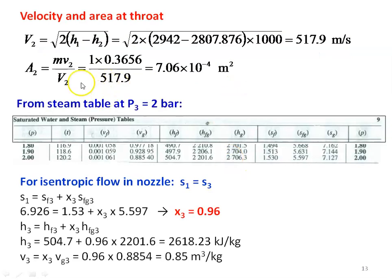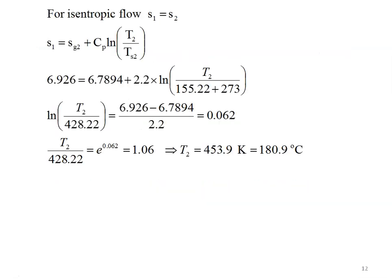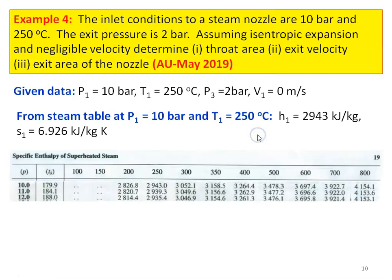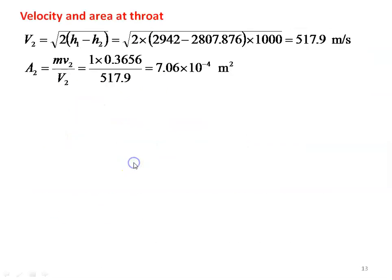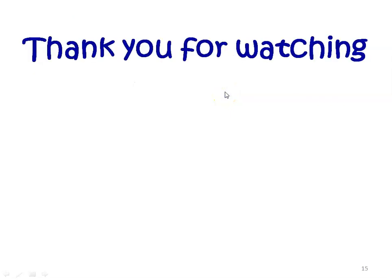So we have calculated the velocity and area at the throat section and the velocity and area at the exit section. As per the question, the throat area equals 7.06 times 10 to the power minus 4 meter square, the exit velocity is 804.7 meters per second, and the exit area is 1.056 times 10 to the power minus 3 meter square.